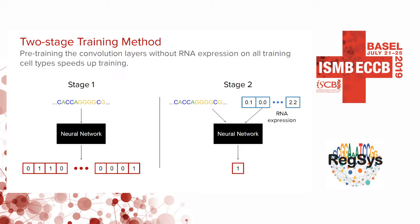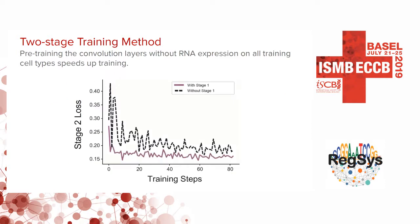We also use a transfer learning approach training in two stages. First, we train a sequence-only model mapping sequence to chromatin accessibility across all training cell types. In the second stage, we initialize weights from stage one and train a sequence-plus-RNA-expression model. Since the first stage learns from all training cell types per iteration versus one at a time in stage two, this speeds up training — empirically, stage two loss is much lower and reduces more quickly when pre-trained with stage one.